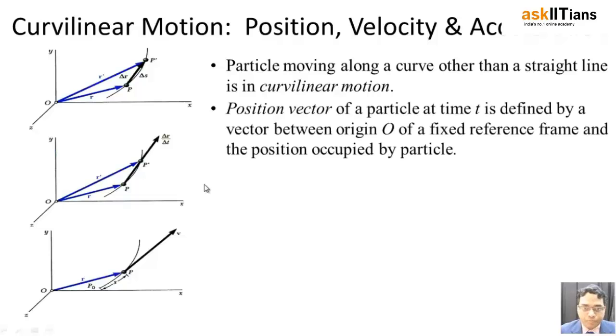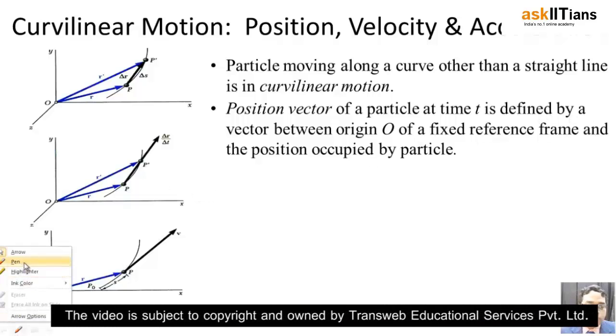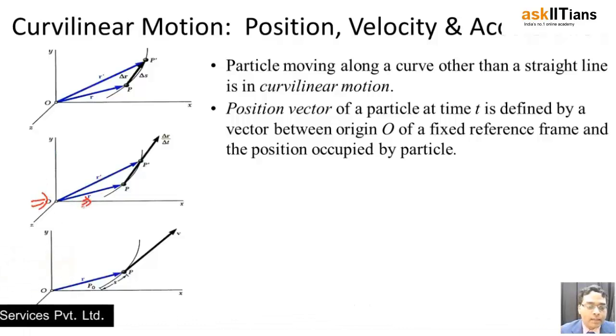In this case, the position vector of a particle at time t is defined by a vector with origin O. So if I say this is the vector, this is the origin, at every instant of time if I say r is the position vector of point P, r prime is the position vector of point P prime, and so on.